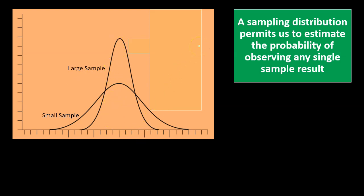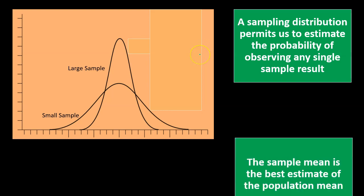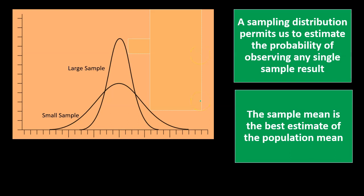A sampling distribution permits us to estimate the probability of observing any single sample result. The sample mean is the best estimate of the population mean. We can estimate the probability using standard deviation methods to consider what a single sample result would be or the probability of a sample result occurring.